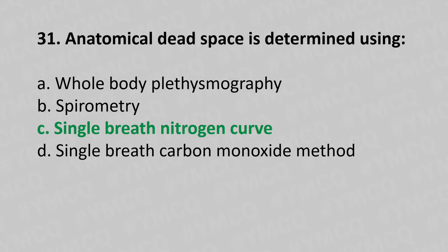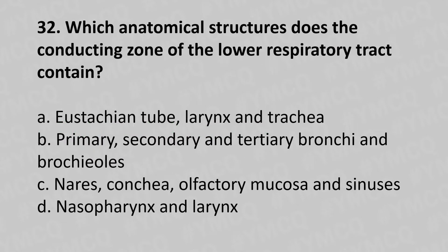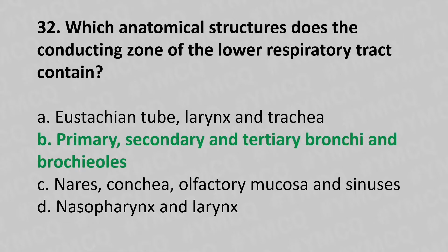Now let's move to question number 32. Which anatomical structure does the conducting zone of the lower respiratory tract contain? Option A: Eustachian tube, larynx, and trachea. Option B: Primary, secondary, and tertiary bronchi and bronchioles. Option C: Nares, conchae, olfactory mucosa and sinuses. Option D: Nasopharynx and larynx. And the answer is Option B, primary, secondary, and tertiary bronchi and bronchioles.